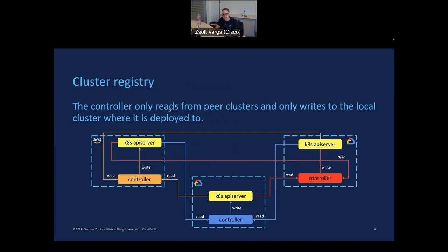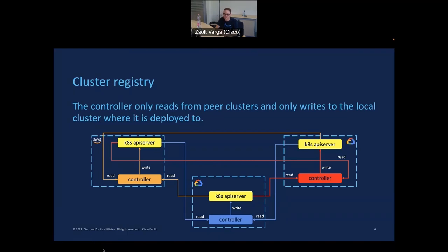The next slide shows the architecture — how the cluster registry controller works in multiple clusters. In a multi-cluster case, the controller is installed in each and every cluster. From a security perspective, write operations only happen on local Kubernetes clusters, and the remote operations are always read-only. So when a controller needs to do some synchronization between clusters, it only reads from the remote clusters and does the writes locally.